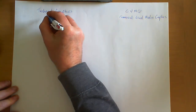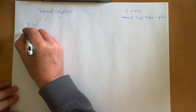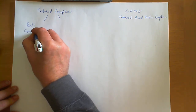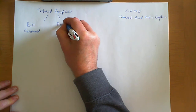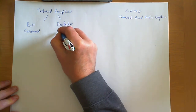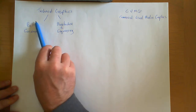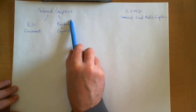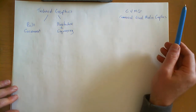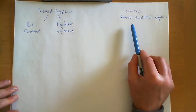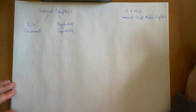Within Technical Graphics we have two further strands: one is called the Built Environment, and the other is Manufacture and Engineering. In CVMG, which is the desktop publishing type of graphics that we deal with, there is just the one strand, simply called Commercial and Visual Media Graphics. Obviously within that there are lots of different topics, but it is a single strand.